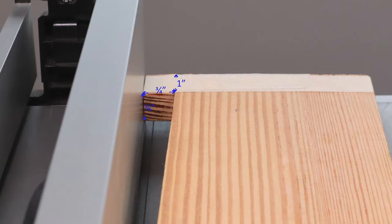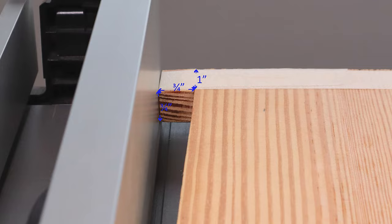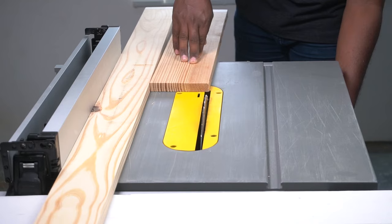This way, when the wood is cut, the top width will remain unchanged and the bottom width will be three-fourths of an inch less, giving us the taper we need.